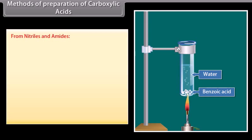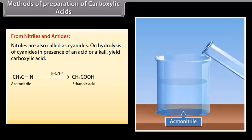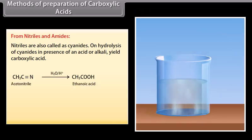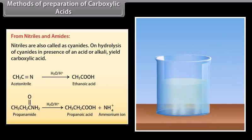From nitriles and amides: nitriles are also called cyanides. On hydrolysis of cyanides in the presence of an acid or alkali, they yield carboxylic acids. Hydrolysis of acetonitrile in the presence of an acid forms ethanoic acid. On hydrolysis of propanamide in the presence of an acid, it forms propanoic acid and ammonium ion.